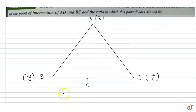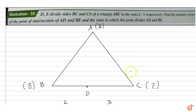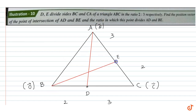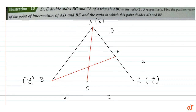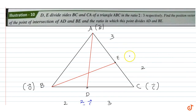Similarly, E divides CA in ratio 2:3. Now the position vector of D will be (2/5) times of C vector. And similarly the position vector of E will be (2 times A vector + 3 times C vector) / 5.